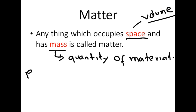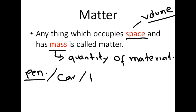For example, a pen has mass. A car, a home — all these things occupy space and have mass. So anything that has mass and occupies space, we call it matter.